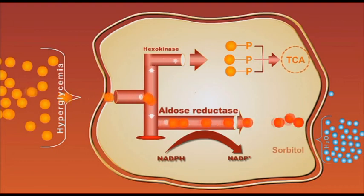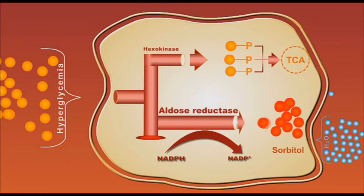The excess glucose is shifted to the aldose reductase pathway, which ultimately produces sorbitol, an osmotically active molecule.